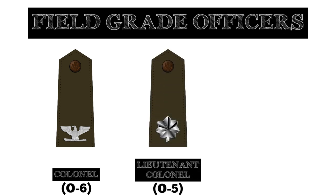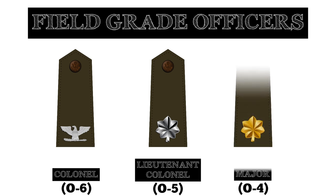Colonels can be identified by a rank insignia with a silver eagle. A lieutenant colonel generally serves as a battalion commander of a battalion consisting of 300 to 1,000 soldiers. They may also serve as executive officers or staff officers in a variety of high-level units or command posts. The rank insignia for a lieutenant colonel features a silver oak leaf. The rank below lieutenant colonel is the rank of major.